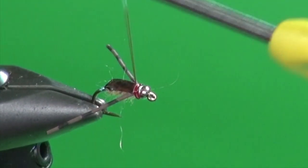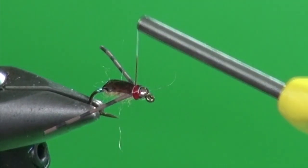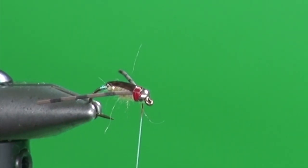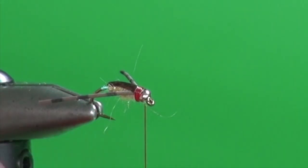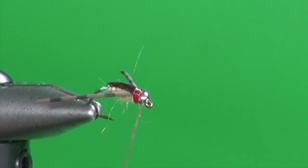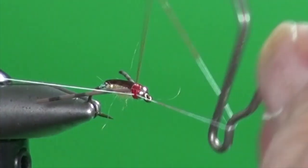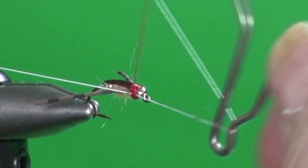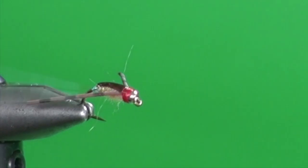So by coating that with red thread, sorry with the red marker, I now create a little red hot spot and I can add a little bit of glue, a little bit more. Just coat that. And then we're just going to whip finish. Don't need too much of a whip finish here, three or four turns is fine.